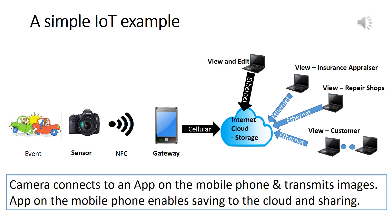This slide illustrates the different components of an IoT solution. The sensor, a camera in this case, captures images of the event. It uses near-field communication protocol to transmit images to the mobile phone that acts as a gateway. The mobile phone uses cellular protocol to transmit images to the cloud. The stored images in the cloud are analyzed by the appraiser, and a subset of images are made available to the repair shops for their action. In short, the slide illustrates the three components of an IoT ecosystem: data collection, analysis, and action.